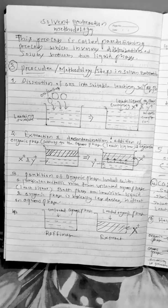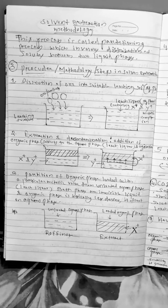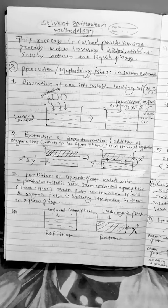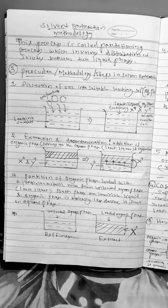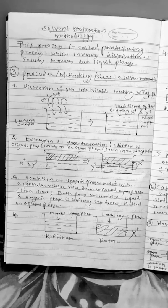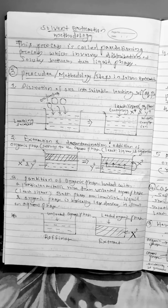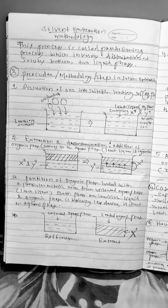Basically solvent extraction is a partitioning process where the solutes get partitioned into two different immiscible liquids. One is organic and one is aqueous. So what is the procedure of solvent extraction?